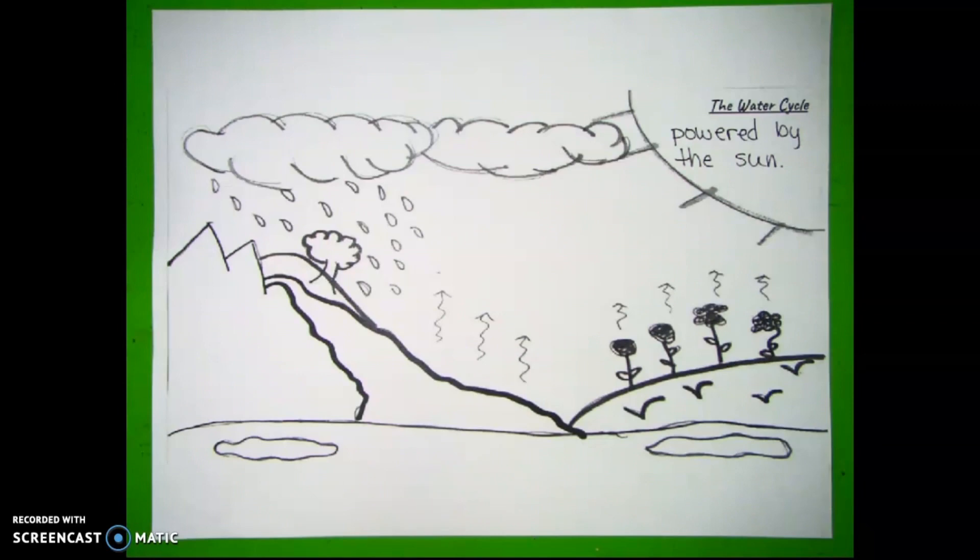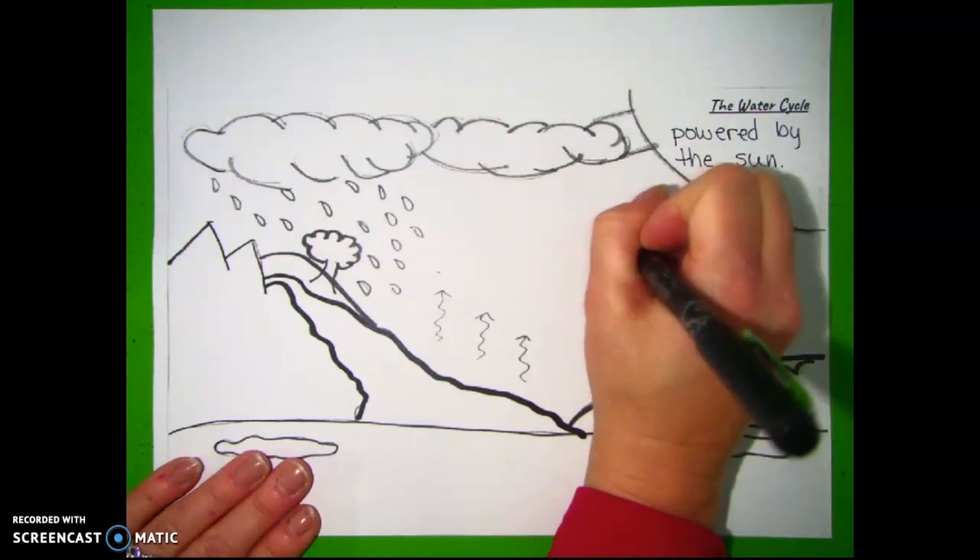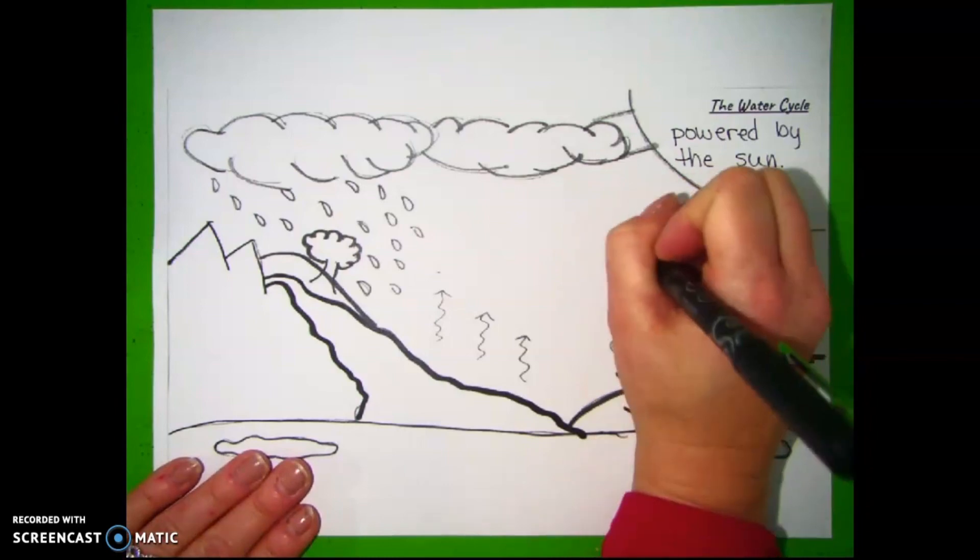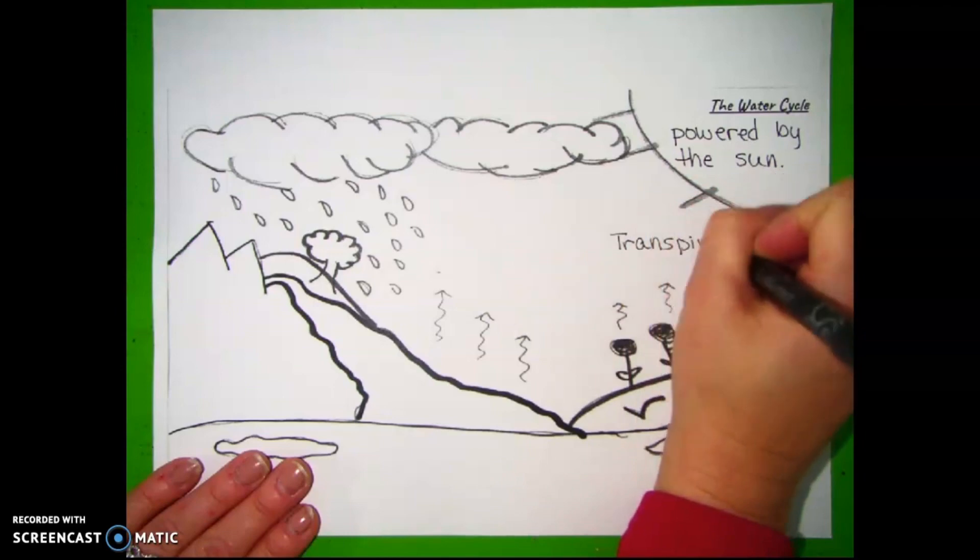The sun is the heat energy that causes transpiration. Transpiration is evaporation from plants.